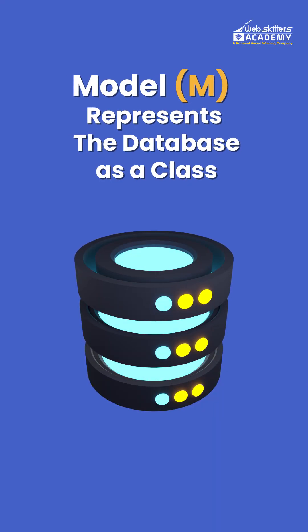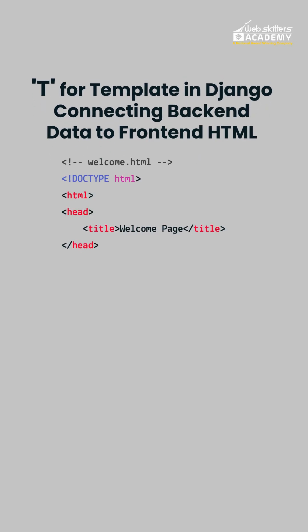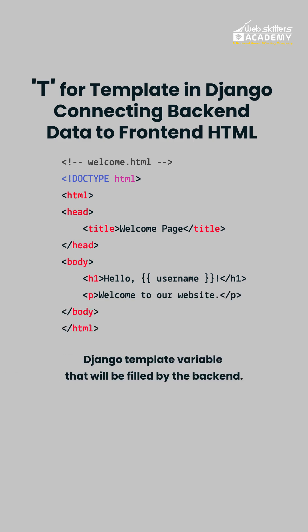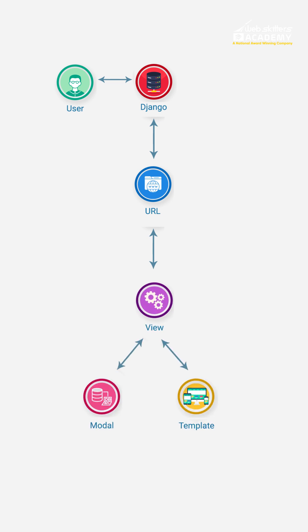When we talk about M, the model represents your database in the form of a class in the context of Django. The term T stands for Template, which is basically your HTML page, which is equivalent to V of Node.js — that is View — which is also a template.